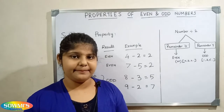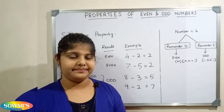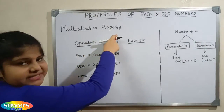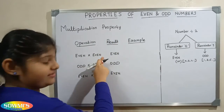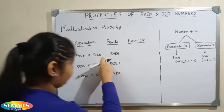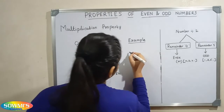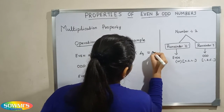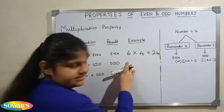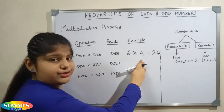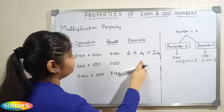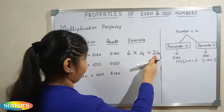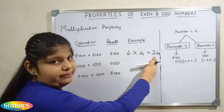Next we will see the multiplication property. When we multiply two even numbers, the result will be an even number. For example, 6 multiplied by 4 is equal to 24. Here 6 and 4 are the two even numbers, and 24 is an even number.